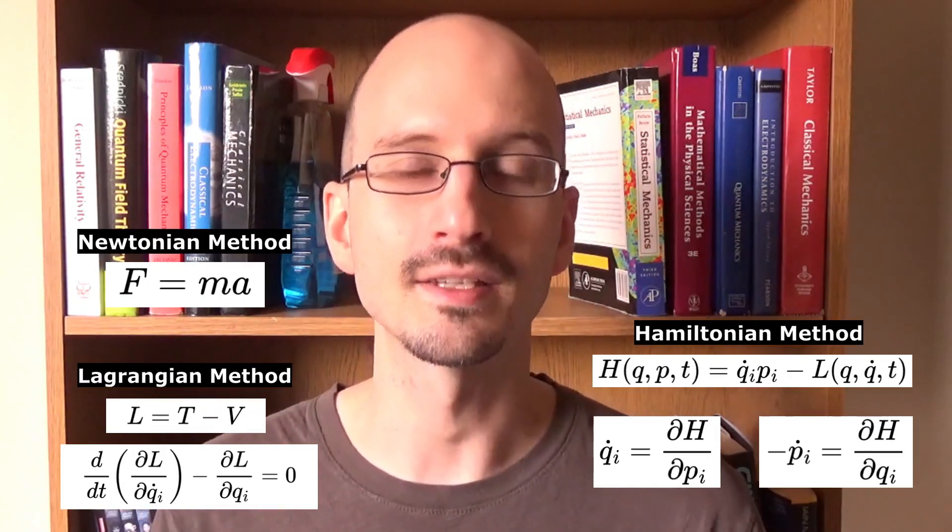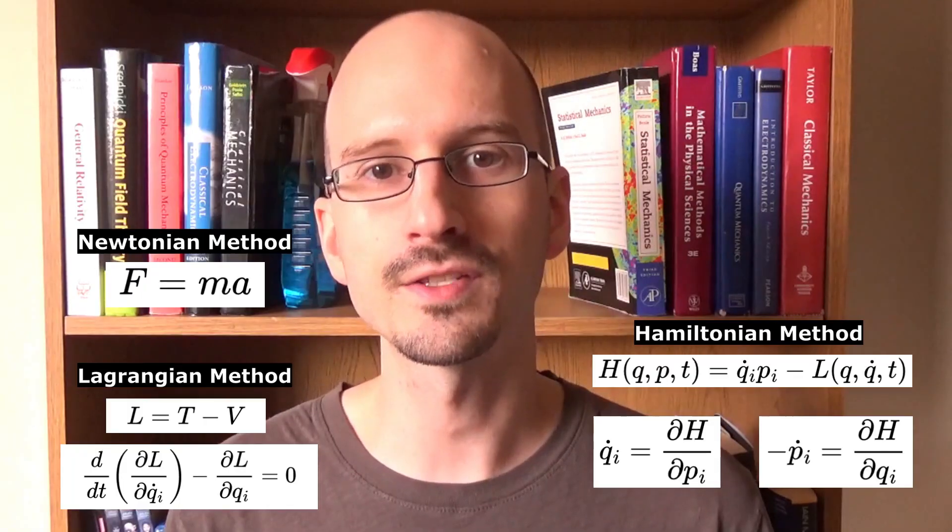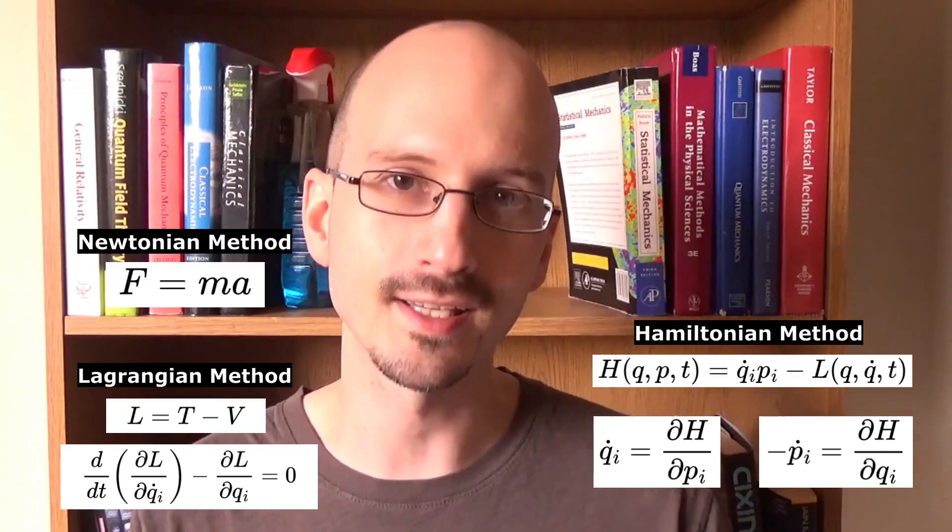Hamiltonian Mechanics describes states in terms of coordinates and momentum. A Hamiltonian understanding of a physical system takes place in phase space. Phase space is hard to diagram because for every coordinate there are two dimensions on the diagram, the coordinate and its conjugate momentum.